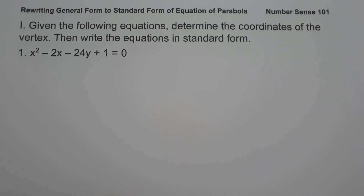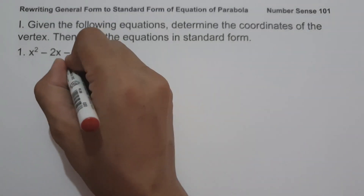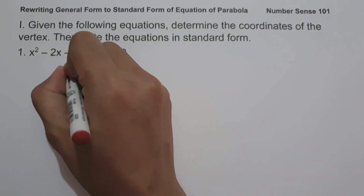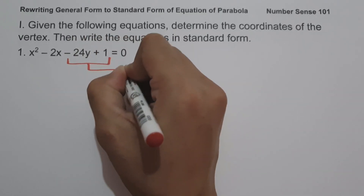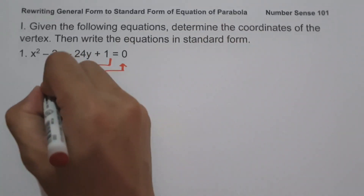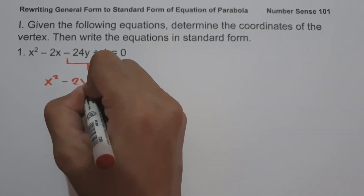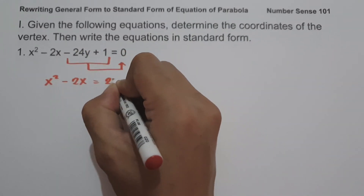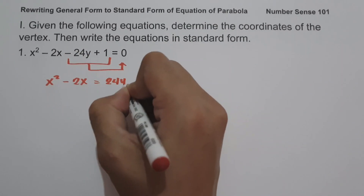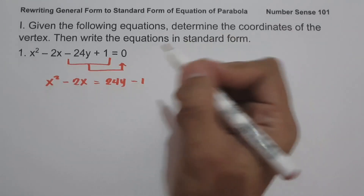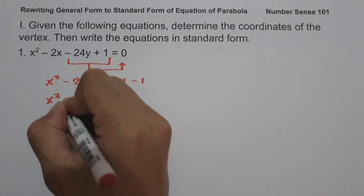On number one we have x² - 2x - 24y + 1 = 0. To write the given equation in standard form, let us move -24y and +1 to the side of zero. So this will be x² - 2x = 24y - 1, and let us perform completing the square.